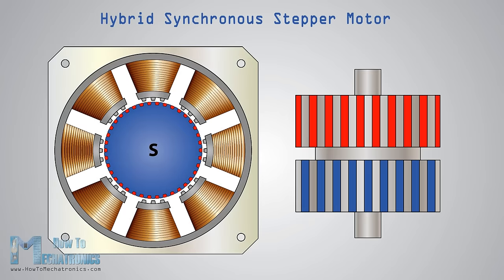The hybrid synchronous motor is a combination of the previous two steppers. It has a permanent magnet toothed rotor and also a toothed stator. The rotor has two sections which are opposite in polarity, and their teeth are offset as shown here.